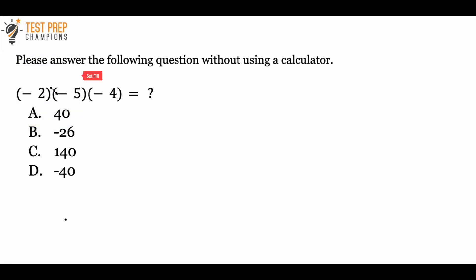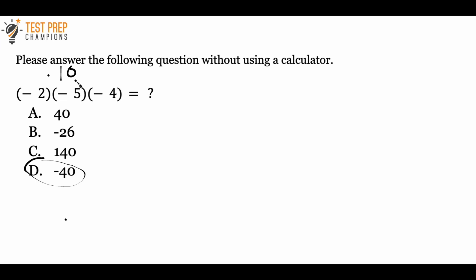The idea here is that if you multiply one negative number times another negative, it gives you a positive number. But then if you multiply that positive by a negative, you're going to get a negative. So without doing any math, I can already tell the answer is going to be a negative number. Let's do the math: negative 2 times negative 5 is positive 10. Positive 10 times negative 4 is negative 40. So the correct answer here is D, negative 40.